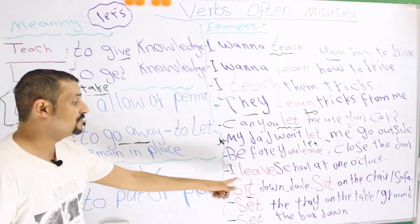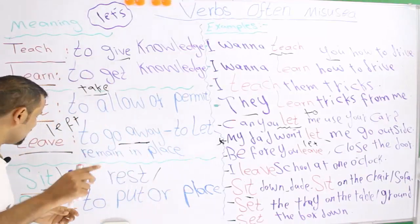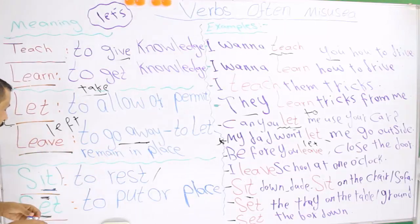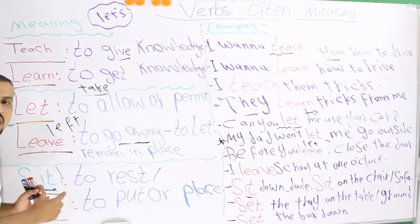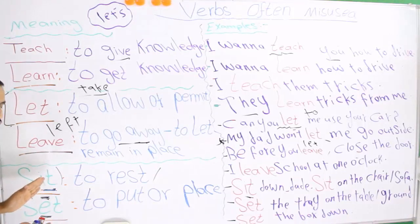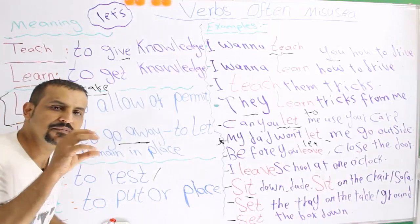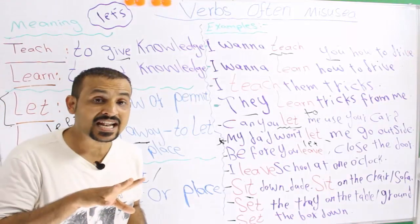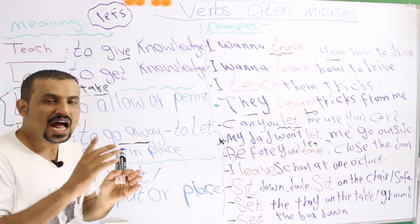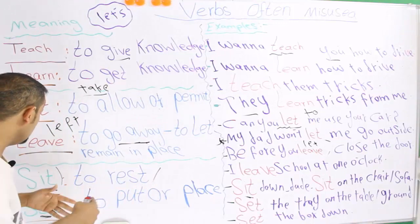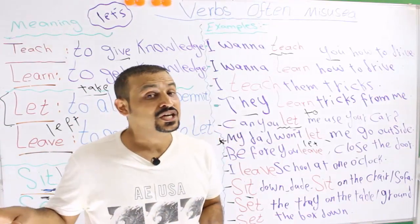Always think about the meaning before you decide. The last pair is sit and set, which are kind of similar in pronunciation. With the letter I, say it fast: sit. With the letter E, open your mouth a bit longer: set. A lot of people get confused with these two words. They are similar in pronunciation but absolutely different in meaning.